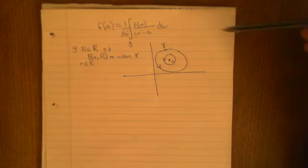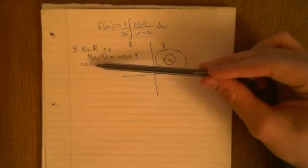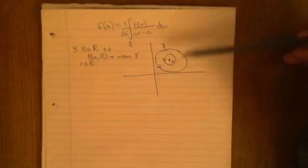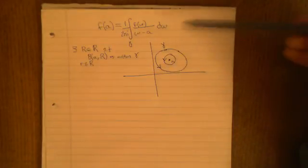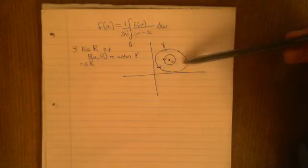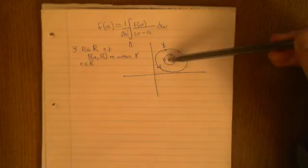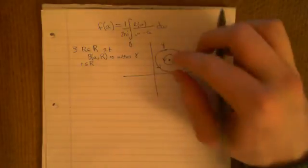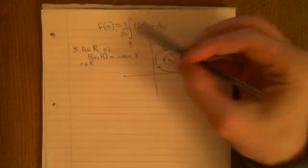If you take a little r that is less than or equal to big R, then all of those balls around a — all of those open discs — will also be contained within gamma. By Cauchy's theorem, the contour integral around the original curve equals the contour integral around any of those little balls inside it, and we can make them as small as we want.